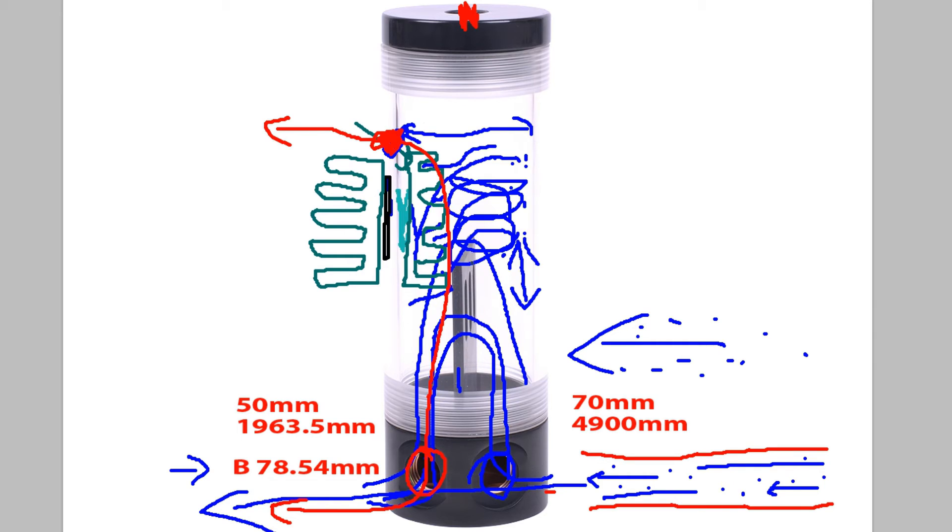So of course instead of using a reservoir, by far the better thing to do would be to buy a TEC water block. And just put your fans and radiators on that. And so it would be in line. The velocity wouldn't be reduced because it would be just in line.